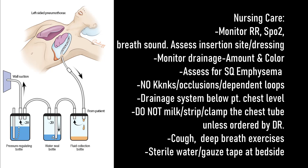Always keep the drainage system below the patient's chest level and in an upright position. Do not milk or strip the chest tube. Check the physician's order, and do not clamp unless ordered by the physician. Encourage coughing and deep breathing exercises. Always have sterile water, gauze, and occlusive dressing tape at the bedside. In case the chest tube becomes dislodged, cover the site with a sterile dressing and tape on three sides — this allows air to escape and prevents tension pneumothorax — then immediately inform the physician.